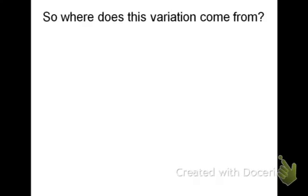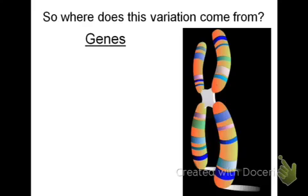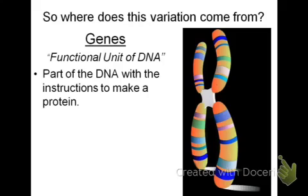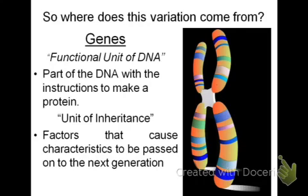So where does this variation come from? Of course, you should know by now that this variation comes from our genes. That's a chromosome with some genes. You should know the two definitions of a gene: they're the functional unit of DNA — the DNA with the instructions that makes the protein — and it's also the unit of inheritance, meaning the factors that cause characteristics to be passed on from one generation to the next. When we talk about genes, we're talking about the part of the DNA that codes for the protein that gives you your characteristics.